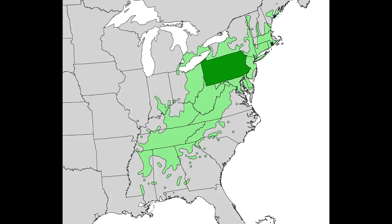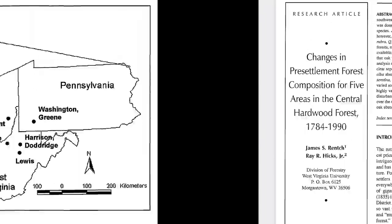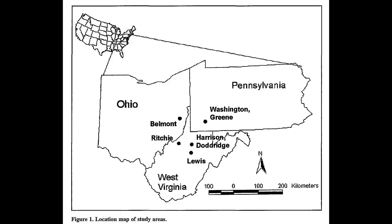To get some answers we can look through the scientific literature, starting with an article that analyzed tree composition figures for five different areas in pre-European settlement forests. All five locations in this study were within the natural range of American chestnut. So how common was American chestnut in these eastern forests?